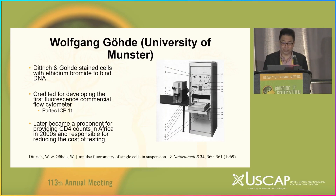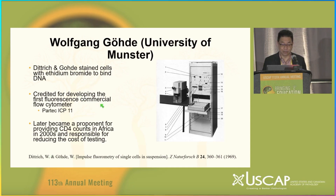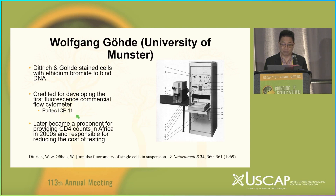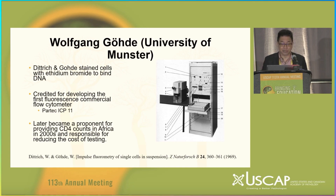Wolfgang Goad from the University of Münster recognized that ethidium bromide is an excellent intercalator into DNA. He used this principle and is credited for developing the first fluorescence commercial cytometer, called the PARTEC ICP-11. He later became a strong proponent, after the discovery of HIV, of providing low-cost CD4 counts in Africa and reducing the cost of testing.